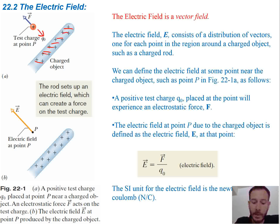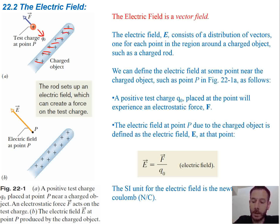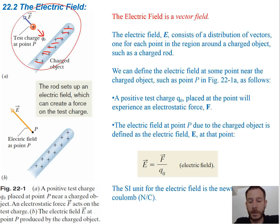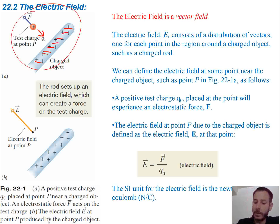A positive test charge Q0 placed at a point will experience an electrostatic force F. That's what we found in the last chapter. The electric field at point P, due to the charged rod, is defined as the electric field E at that point.